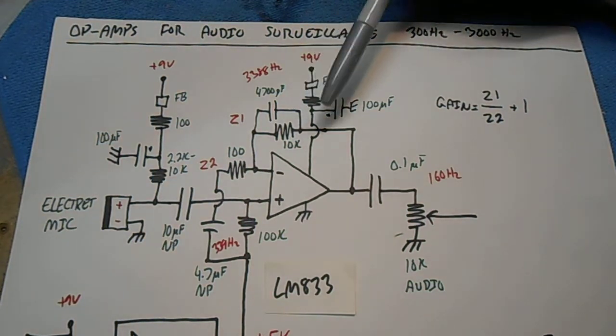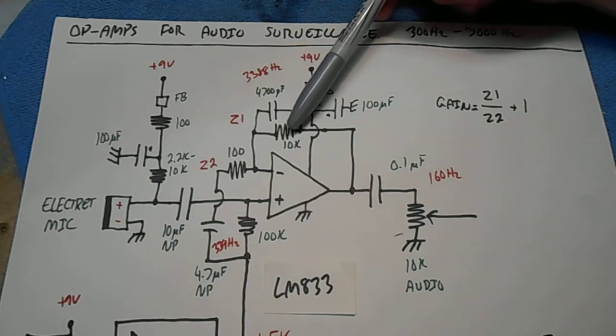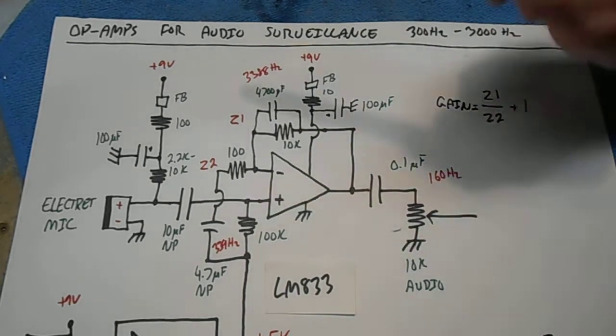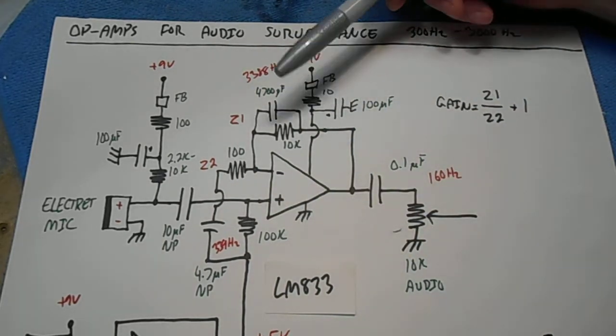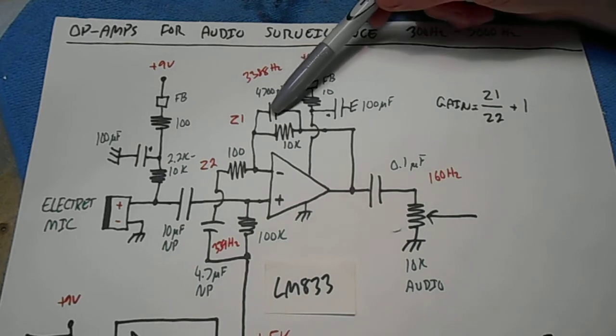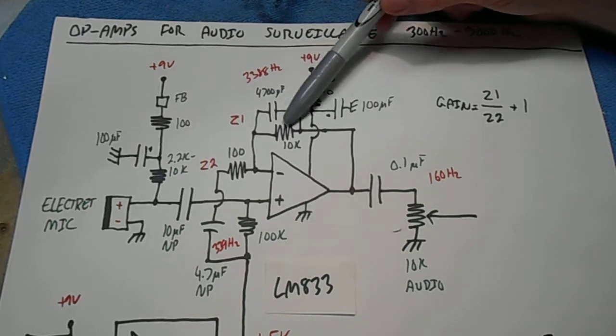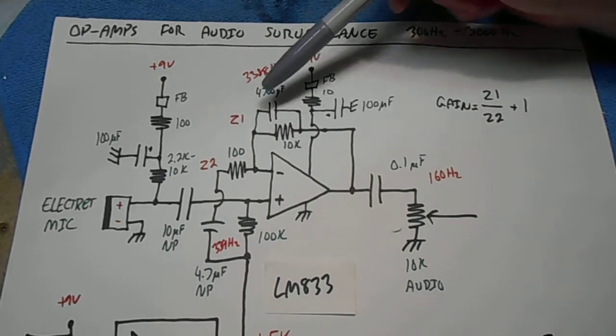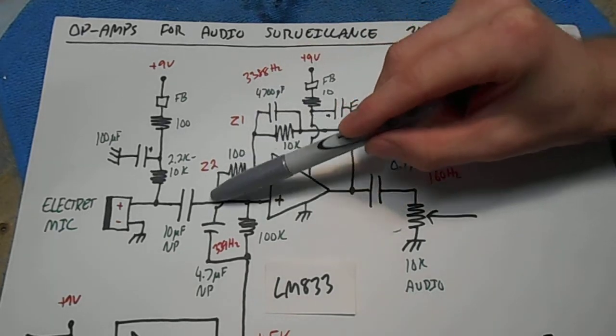Normally, when you calculate a non-inverting gain of an op amp, it's just the feedback resistor divided by the input resistor plus 1. But because we added the capacitor, we have to determine the impedance of this network, the impedance of the feedback network, and the impedance of the input network.